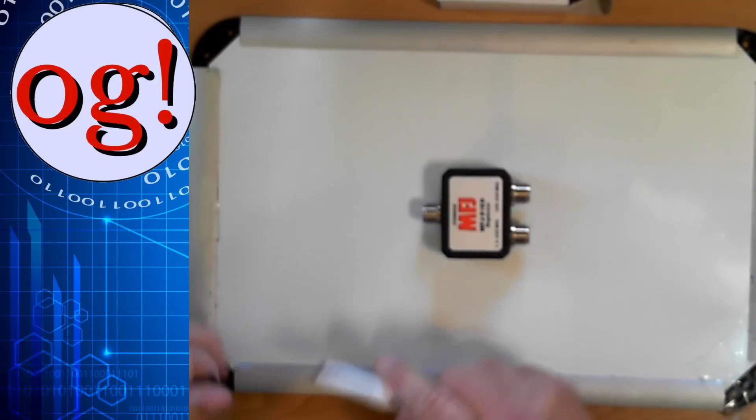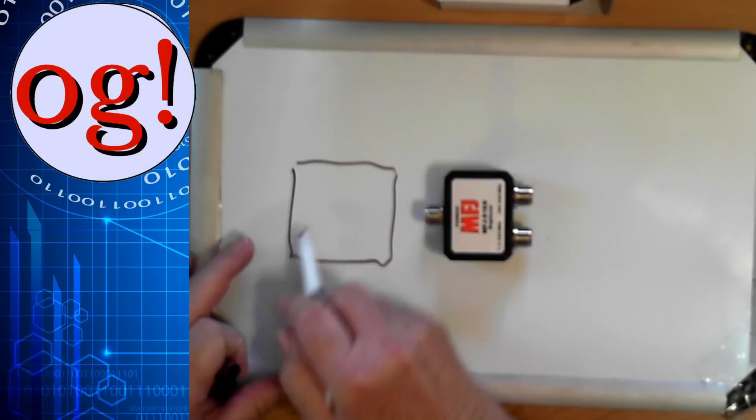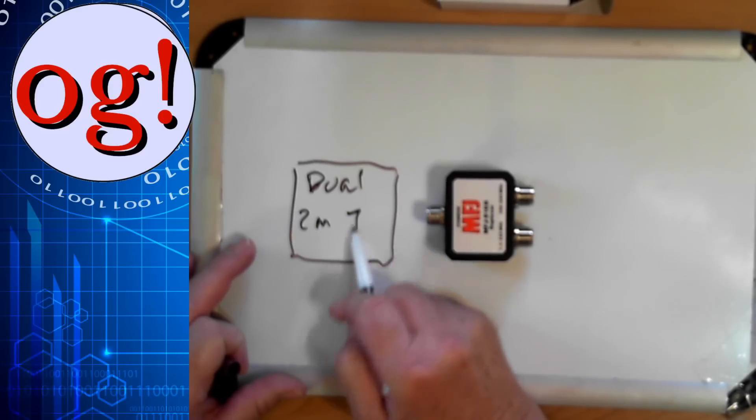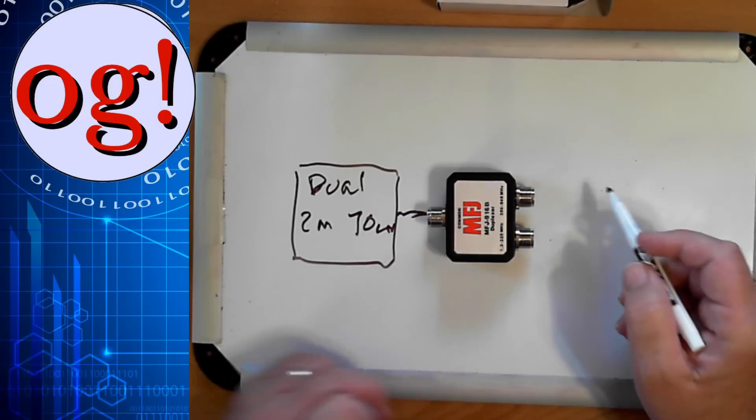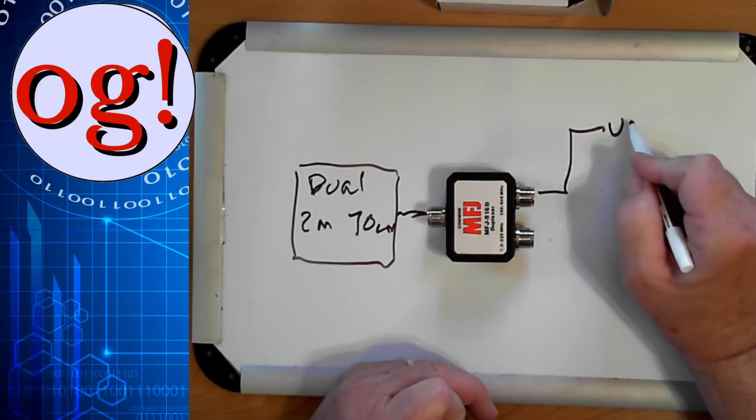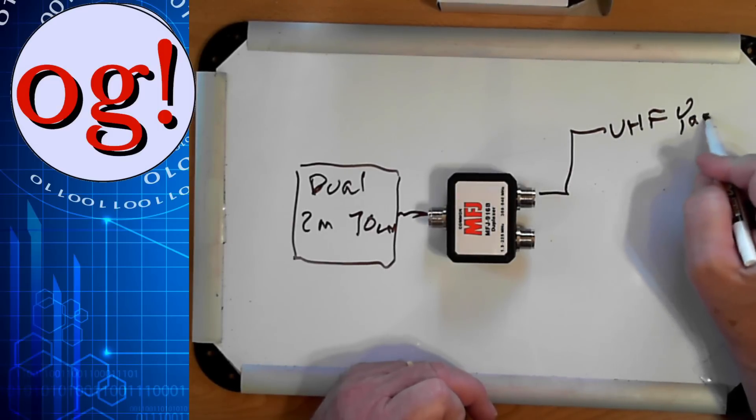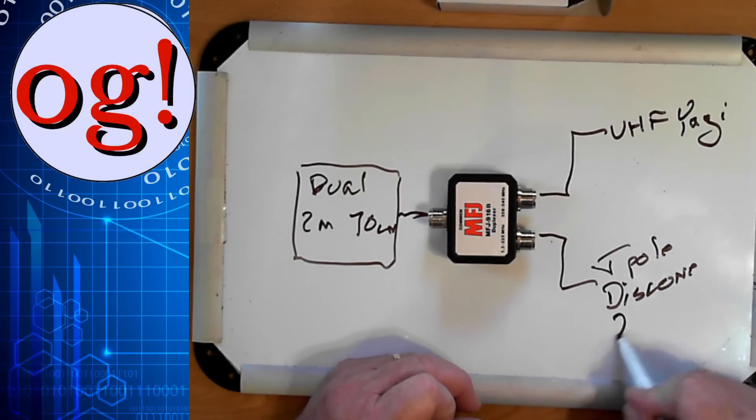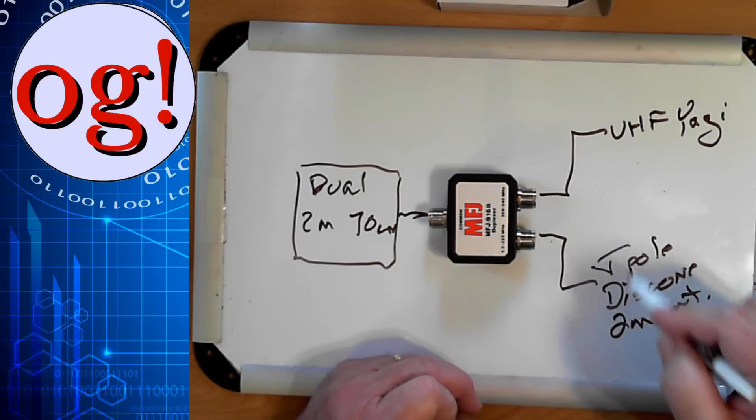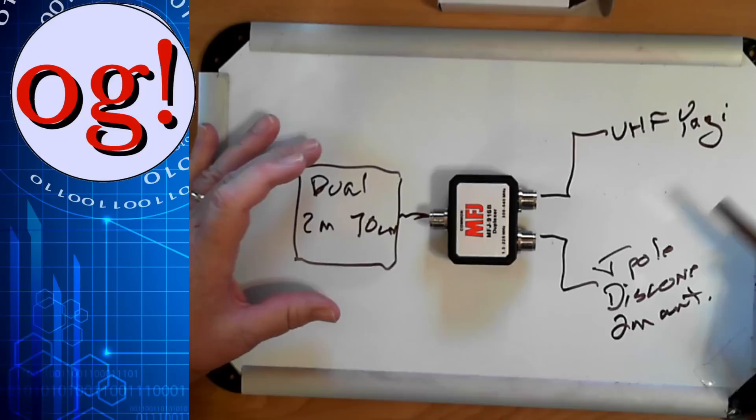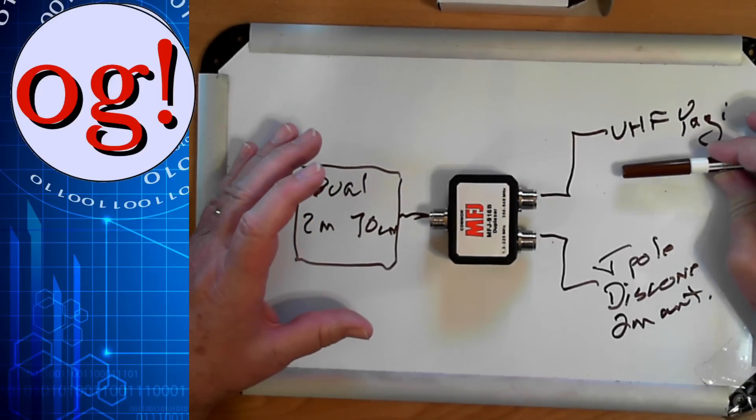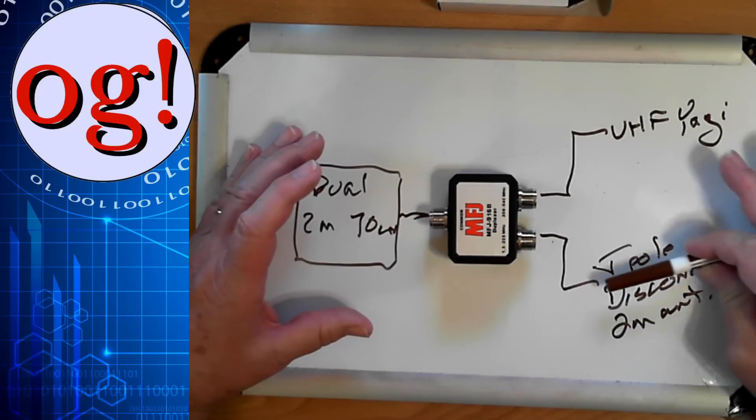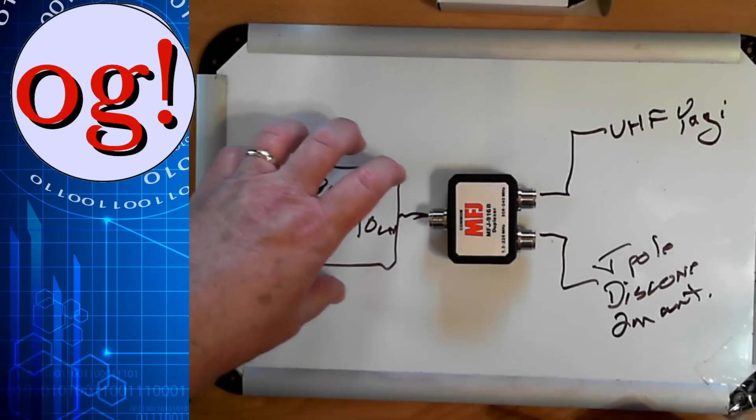So over here, I'm going to have a dual band radio. Dual band, which would be 2 meters, 70 centimeters, coming in here. And then over here, I've got a UHF Yagi, the 10 element Yagi I got some time ago. And over here, you can put a J pole or a disc cone or a 2 meter antenna of some sort. And that works too, if you have a separate antenna for the 70 centimeters, like I do, plus a J pole that I have for 2 meters.